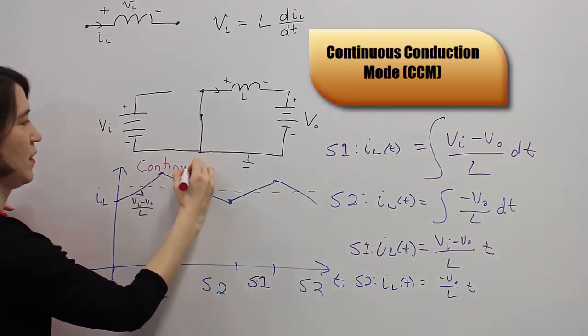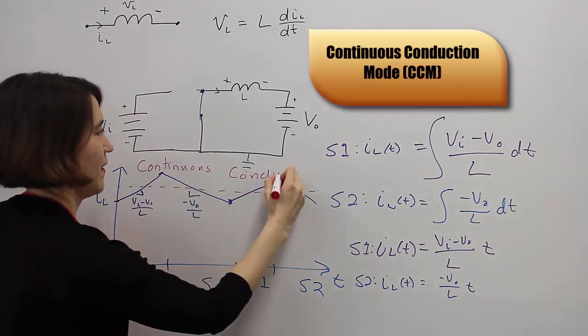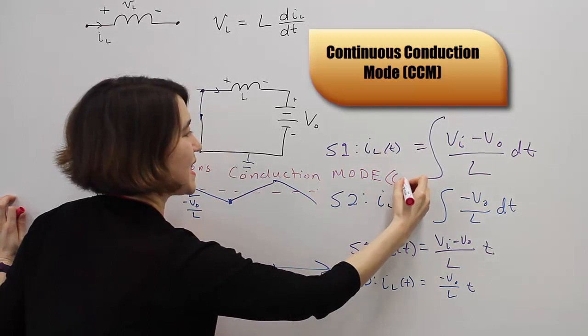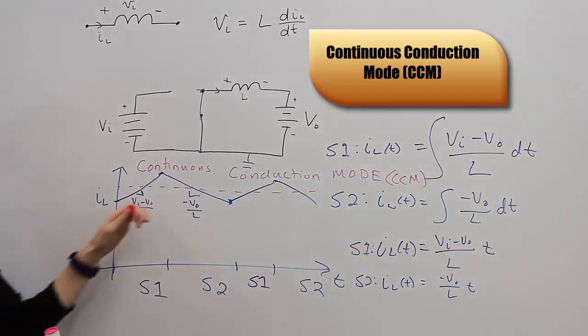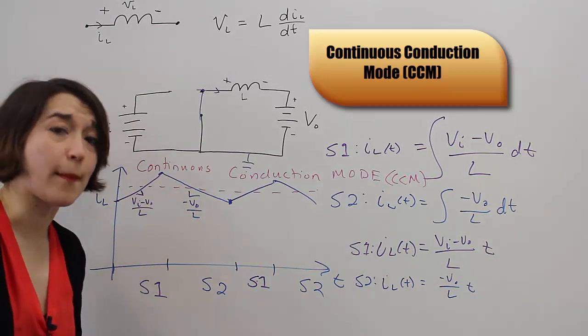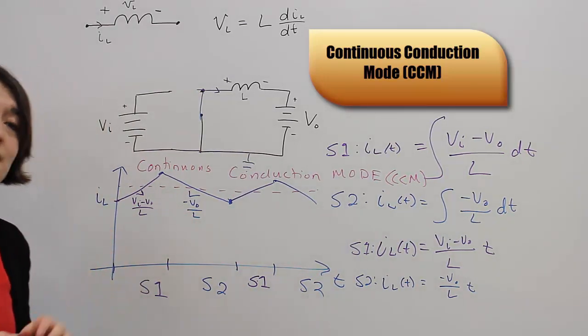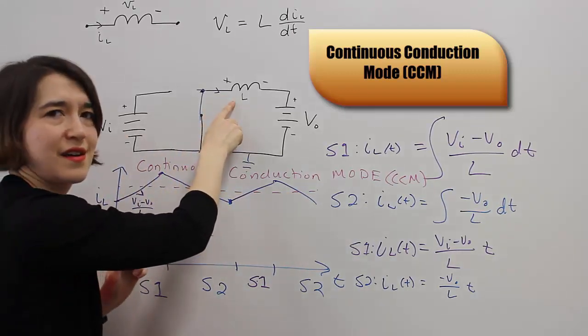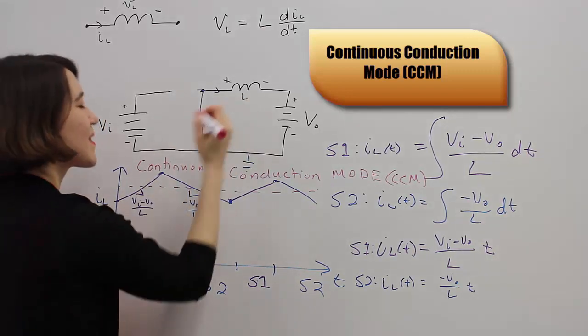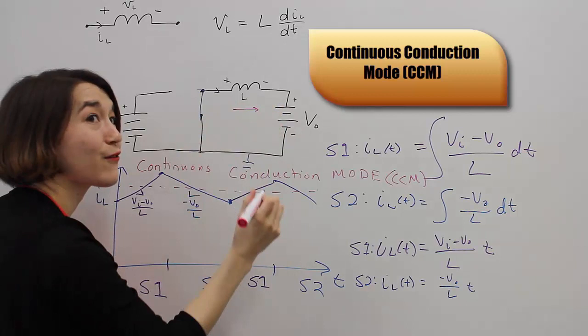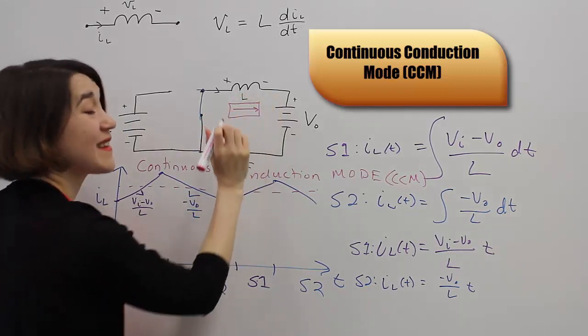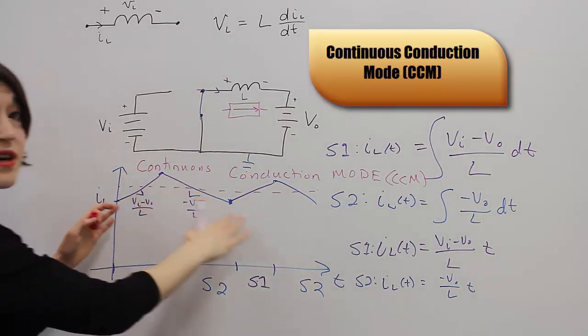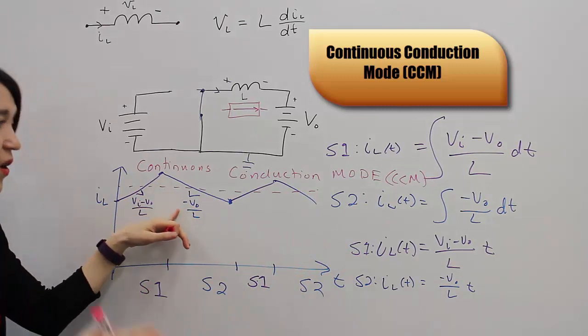Continuous conduction mode. And for short, we usually just say CCM. Now CCM, this is your normal mode. You usually want to operate in this mode. It's the easiest to understand. And because this average value is in one direction, you can think of this current, the current through the inductor, as effectively an average current source. So it's not exactly the same, but the average current will be going in one direction. And we'll have this kind of waveform. This is called continuous conduction mode.